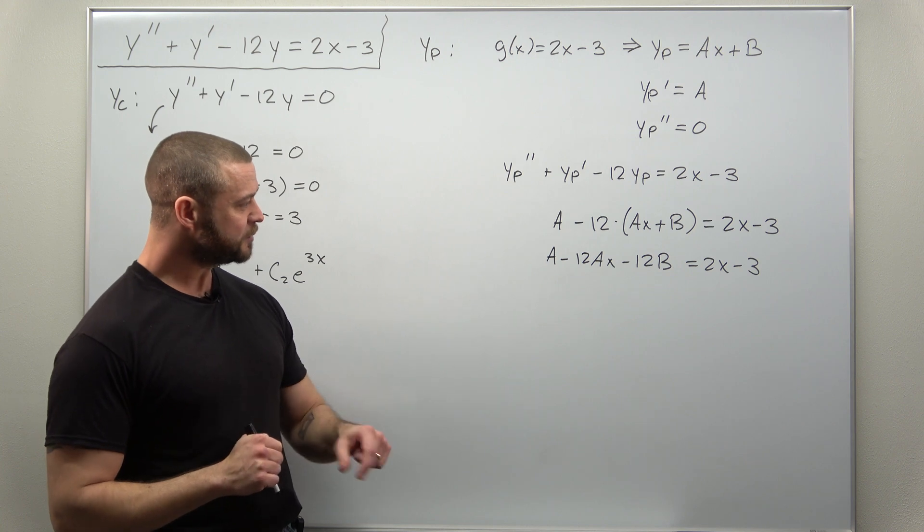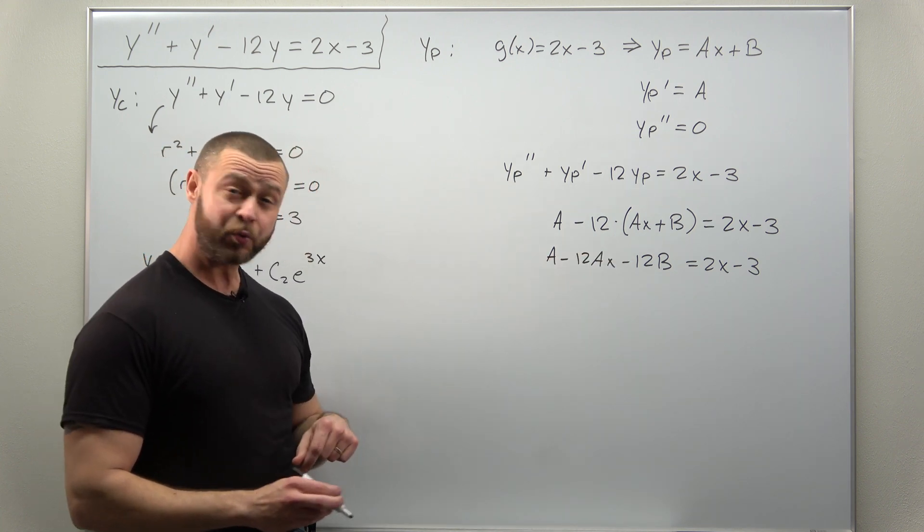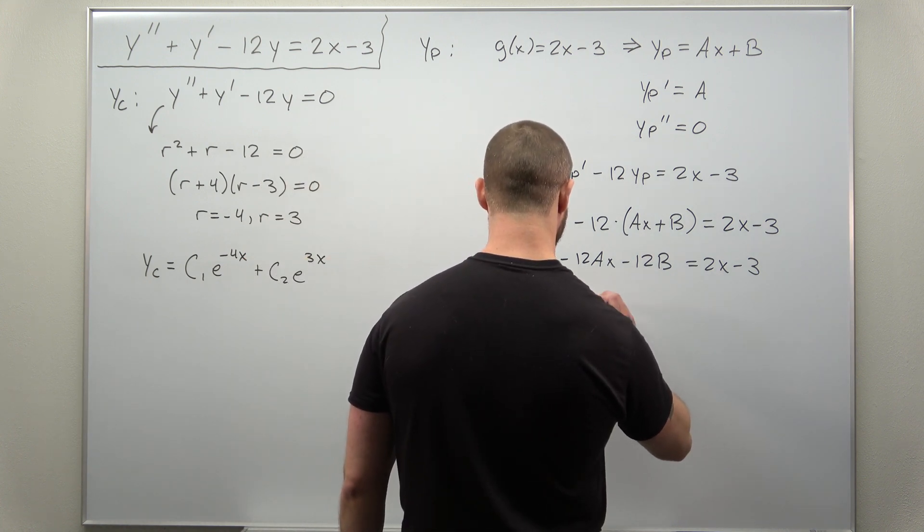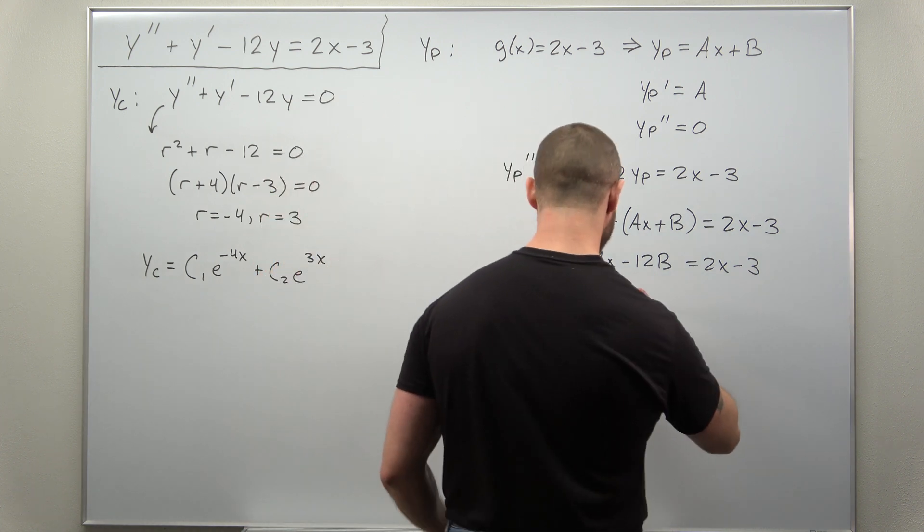I can write this as a minus 12ax minus 12b. If we collect our terms together, let me write the minus 12ax first and then our constants are a minus 12b.